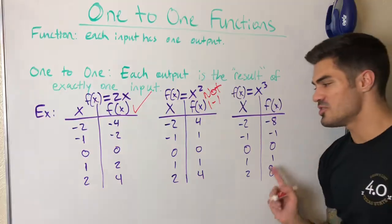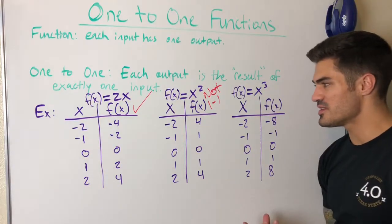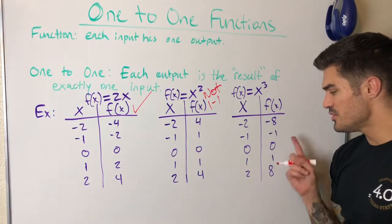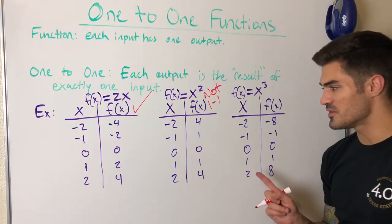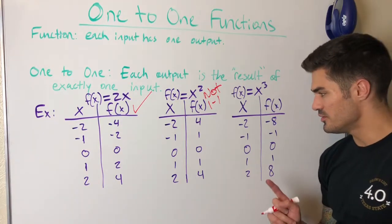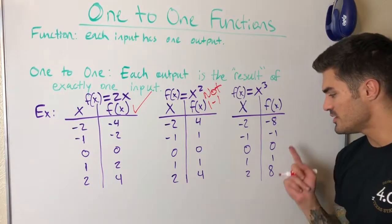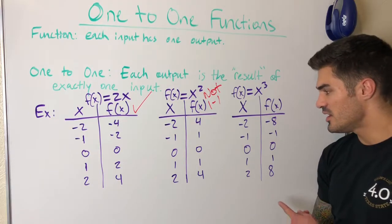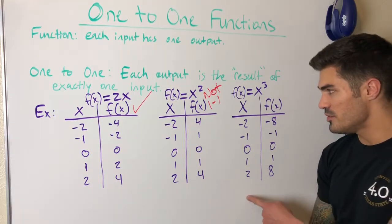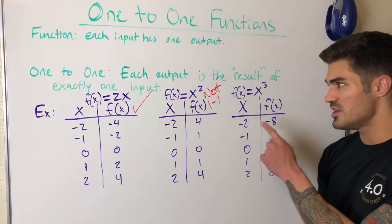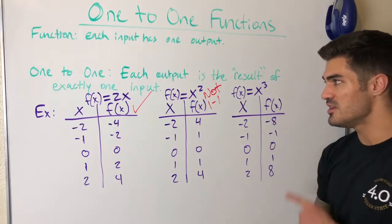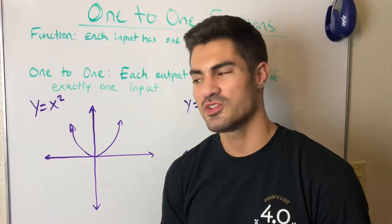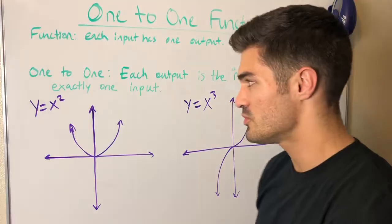Our last table example is f(x) = x³. Looking at the inputs, each has exactly one output — it's a function. And looking at the outputs, each appears only once and is the result of exactly one input. So this is both a function and it is one-to-one.